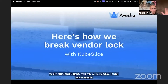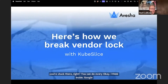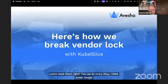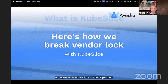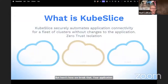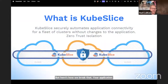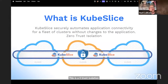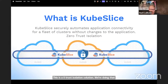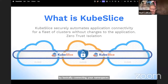But here's how we break that vendor lock. Your application connectivity for fleets of clusters without changes to the application. This is a zero trust isolation solution. We're doing that by basically connecting your namespaces.